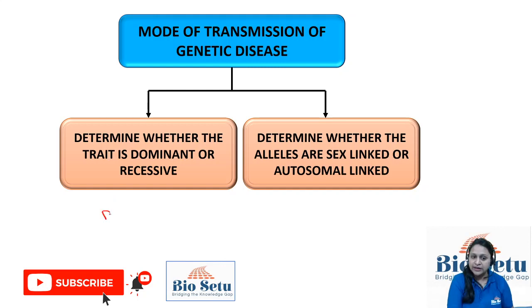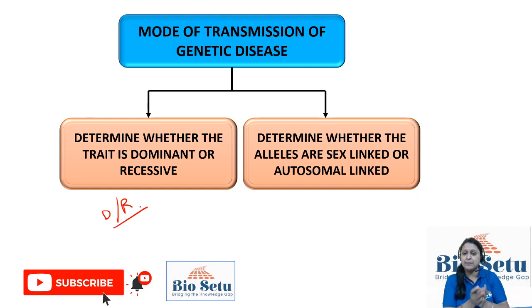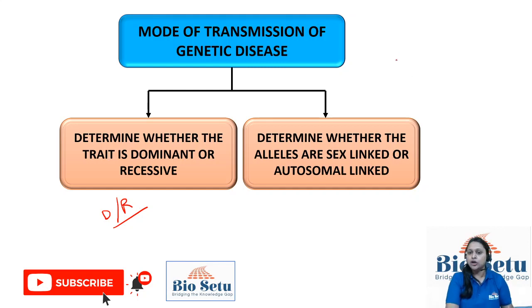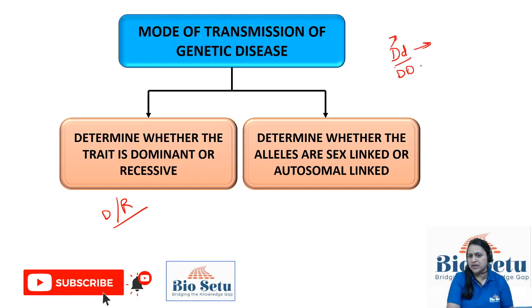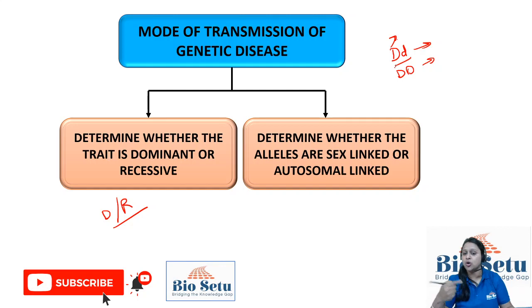First, we need to know whether the allele is a dominant allele or a recessive allele. The advantage of a dominant allele is that a single allele is sufficient to express the trait. So if a dominant allele is present even once, it will express, because a single dominant allele is sufficient to cause the disorder.